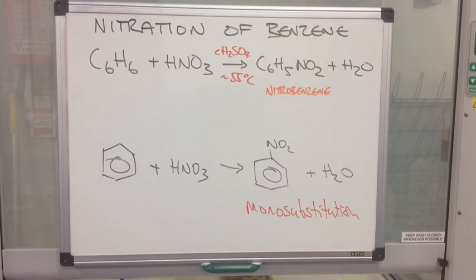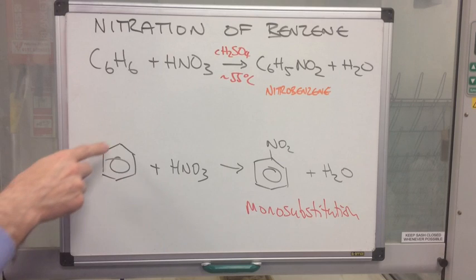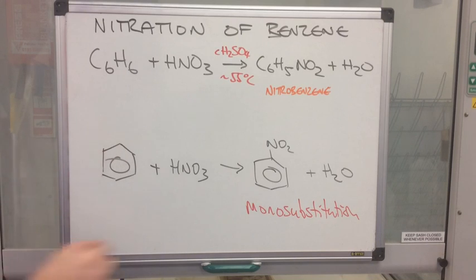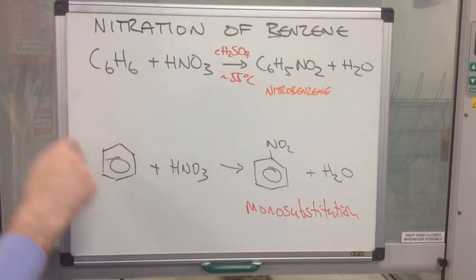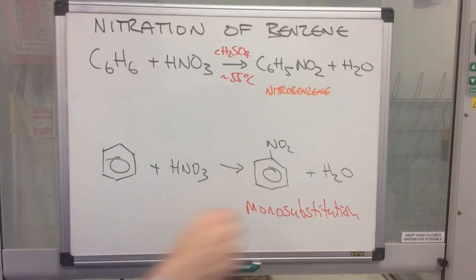Now a little bit of terminology for you. The type of substitution that's taking place is what we call monosubstitution. So just remember there's a hydrogen at each corner of this benzene ring. One of those hydrogens, or this one in the diagram that I've drawn, this hydrogen is going to be substituted with the NO2 part. We've taken an H off and put an NO2 group on, and because that's only happened in one position, this is known as monosubstitution.